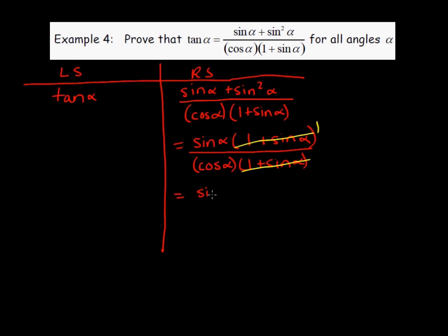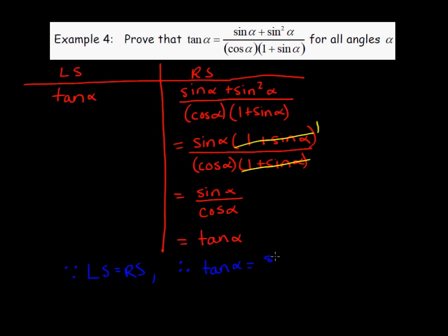We see a common factor of (1 plus sine alpha) in numerator and denominator, which cancels to 1. We're left with sine alpha over cosine alpha, which from example one we proved equals tangent alpha. Since the left side equals the right side, therefore we know the statement — tangent alpha equals (sine alpha plus sine squared alpha) over (cosine alpha times (1 plus sine alpha)) — is true.